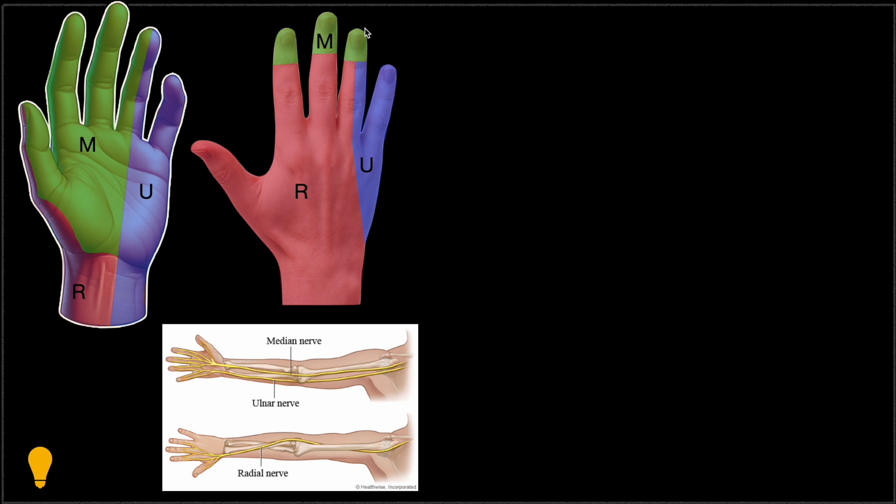Dorsal side it is divided into three parts. The other thing that is consistent is that the pinky finger is always innervated with the ulnar nerve from the palmar surface and from the dorsal surface.